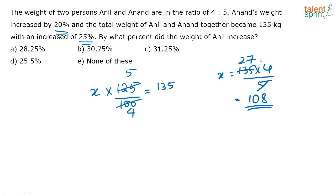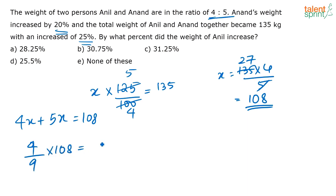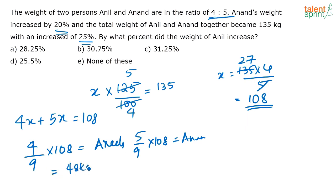Their total weight earlier was 108. Since the ratio of their weights is 4:5, we have 4X + 5X = 108. So Anil's weight is 4/9 of 108, and Anand's weight is 5/9 of 108. Anil's weight is 48 kg and Anand's weight is 60 kg.